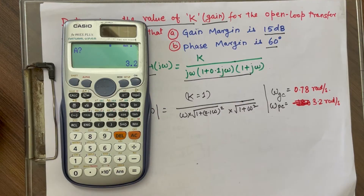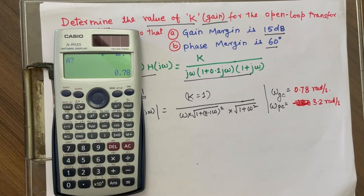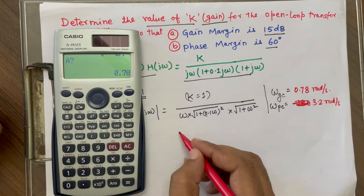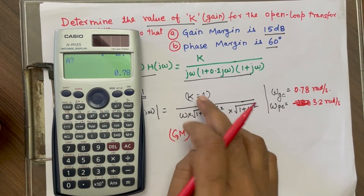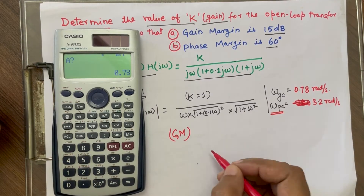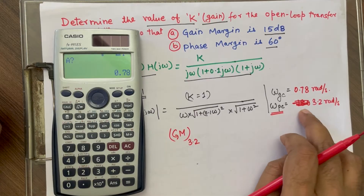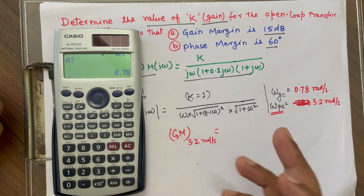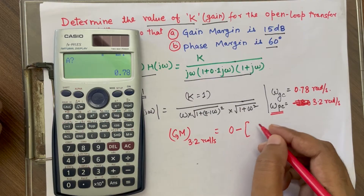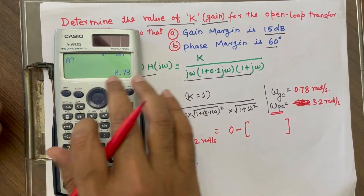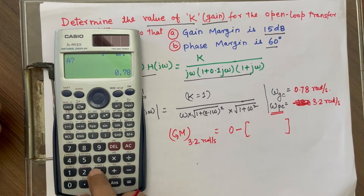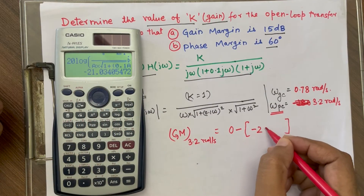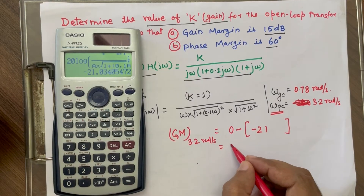Now the gain margin will be calculated at the phase crossover frequency. We have the magnitude formula in the calculator, and gain margin is calculated at 3.2 rad/s. The gain margin equals 0 dB minus the value of the function at 3.2. Calculating at 3.2 gives −21 dB, which means the gain margin is 21 dB when K = 1.